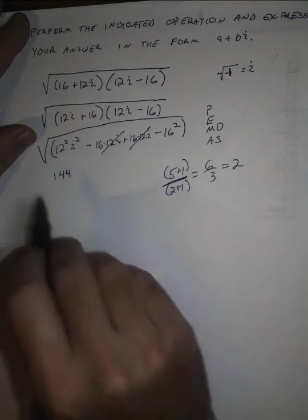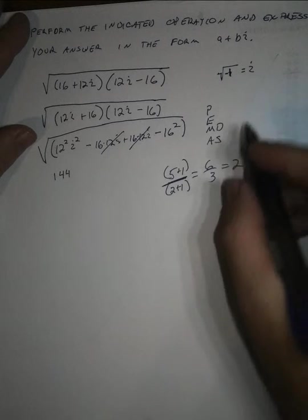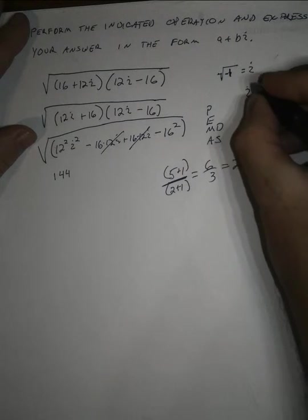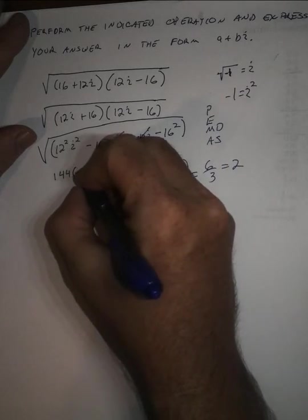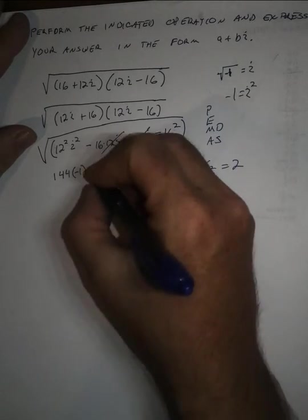I squared, the neat property that this gets us is i squared is negative one. So this is 144 times negative one minus,